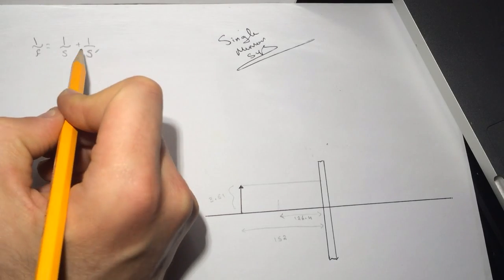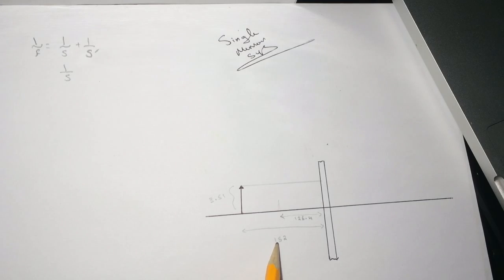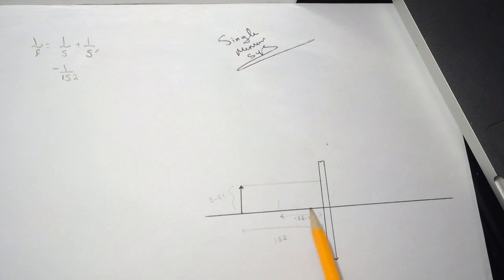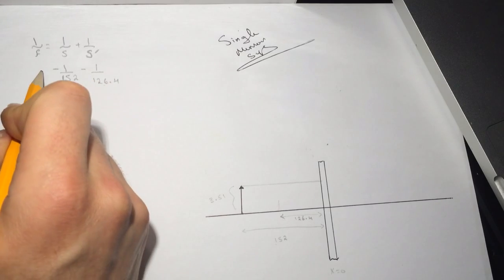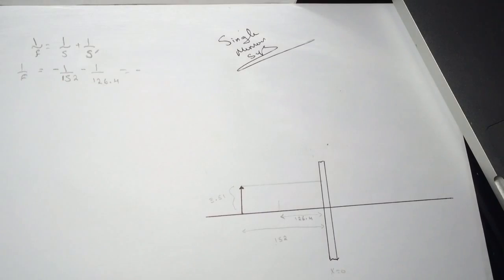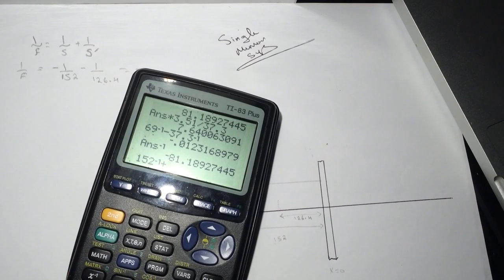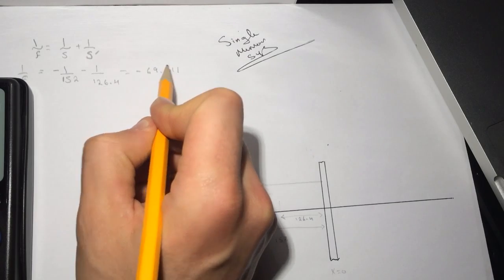So 1 over s — s is the distance between the mirror and the object, so this is 152. We put negative because this is where x equals 0, and everything here is negative. Negative 1 over s prime is minus 126.4. So we get a negative value for the focal point. Plugging in those numbers: 1/152 + 1/126.4 gives us negative 69.011.